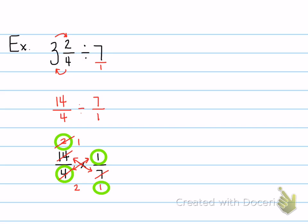So when I'm looking at what I'm actually multiplying, I have this 1 times 1, which equals 1, and this 2 times 1, which equals 2. And what I have left is 1/2.